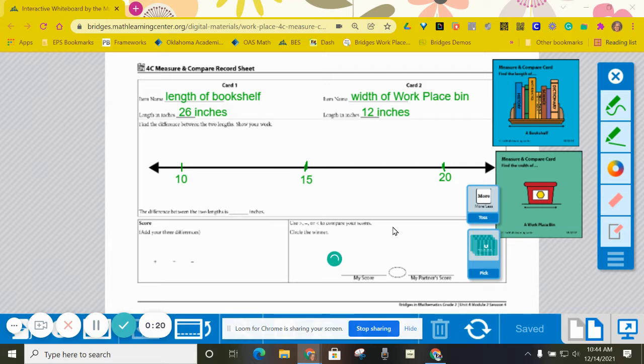You're going to mix the cards and put them face down between you. Then each player will draw so that they have two cards. I have already drawn my two cards here, and I wrote the name of each card right here where it says item name.